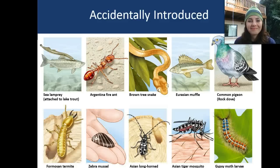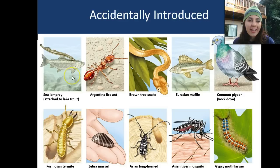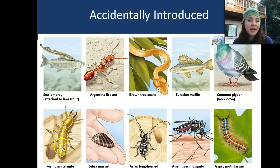Species that have been accidentally introduced — meaning we did not want them there — include the sea lamprey, which attaches to lake trout and devastates the trout population; the Argentine fire ant; the brown tree snake; the Eurasian ruffe; the common pigeon; the Formosan termite; the zebra mussel; the Asian long-horned beetle; the Asian tiger mosquito; and the gypsy moth larvae.